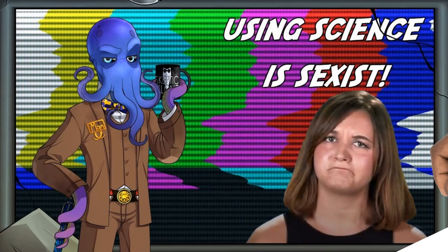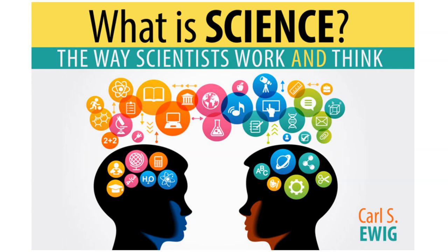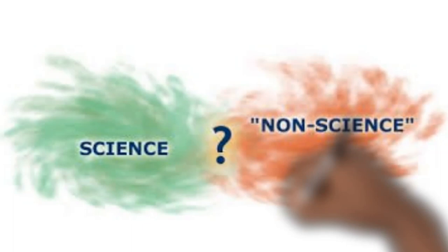So what is then the aim of the philosophy of science? Well, it's simple: to answer the question, what is science? Are the claims that we believe to be scientific really scientific? And this leads us to a very important problem in the philosophy of science called the demarcation problem, which concerns determining what is and what is not science.